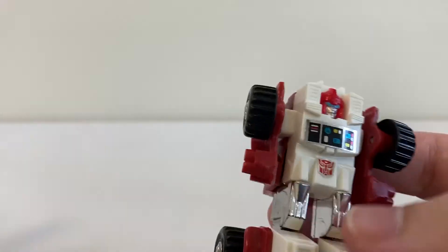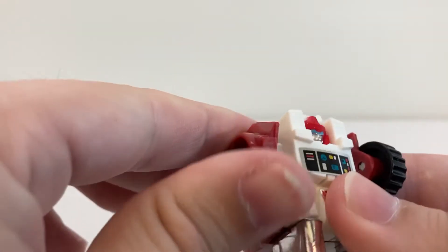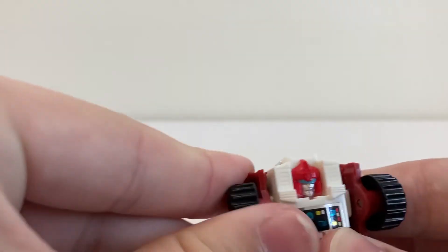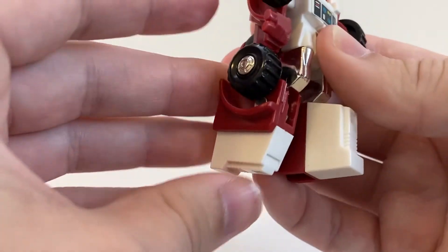Articulation-wise, he's a G1 figure, so there's not a ton. The arms can rotate around and obviously move in and out on that transformation joint.